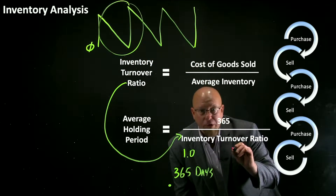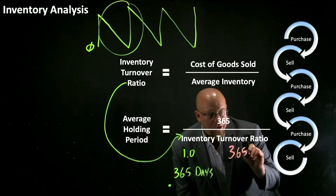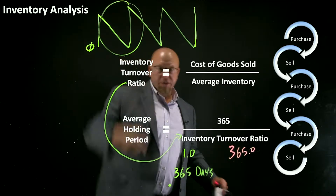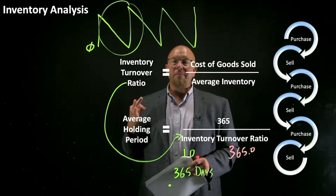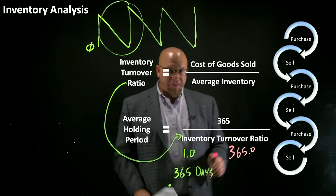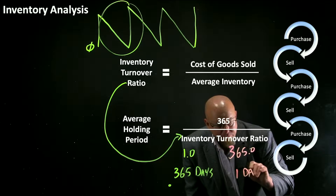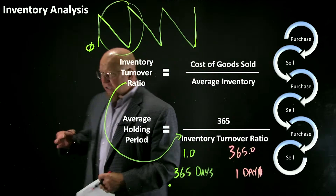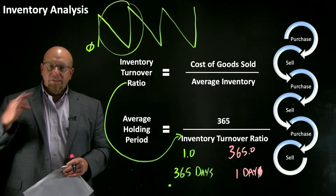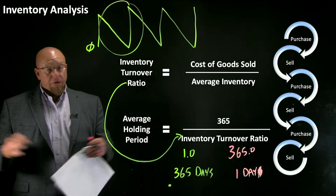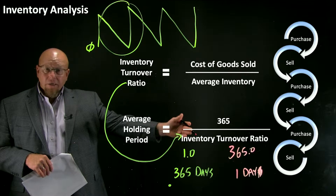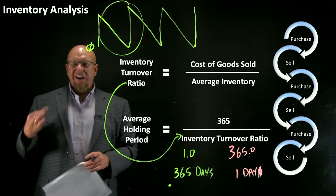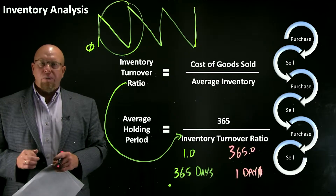Let's look at the other extreme: what if your inventory turnover ratio were 365.0 — meaning this purchase/deplete cycle happens 365 times a year? That's probably unrealistic for a lot of businesses, because it means on average you would hold on to your inventory for just one day before selling it and replenishing. Granted, that's a lot less hassle — I would rather have an average holding period of one day instead of 365 days. That might make sense for something like a sushi restaurant.